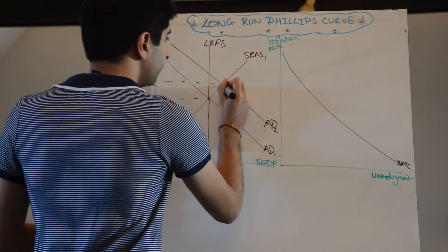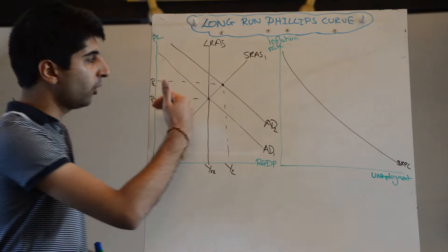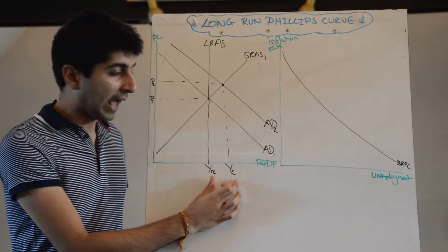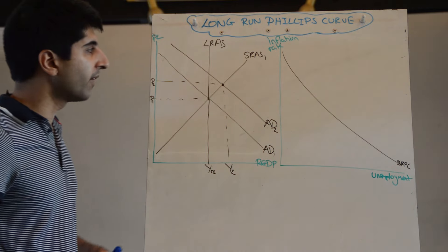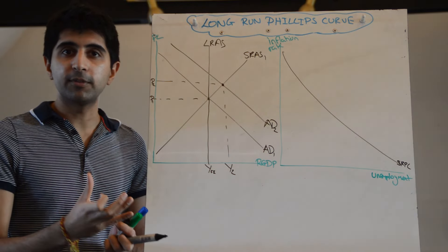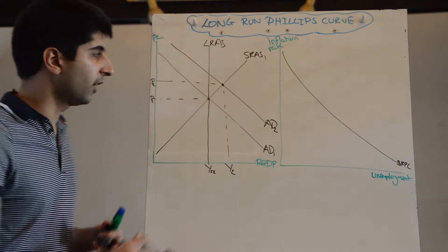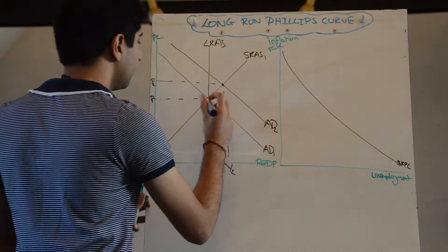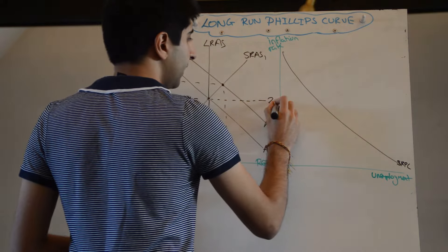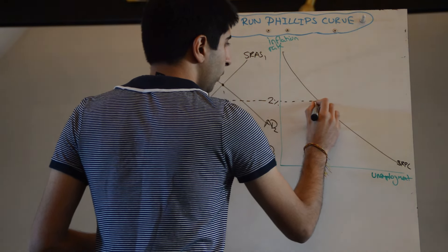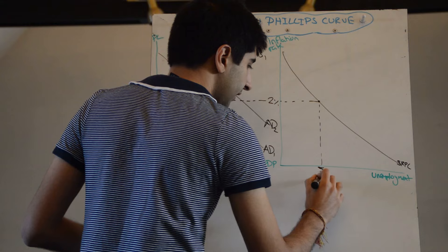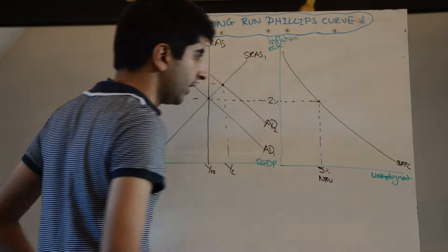Move across to our Phillips Curve. We need to show an increase in inflation and we need to show a reduction in unemployment, as output is increasing when labour is a derived demand. And that means a movement up the Phillips Curve. Let's say that the initial equilibrium was representative of two percent inflation with unemployment at the natural rate — let's call that five percent.